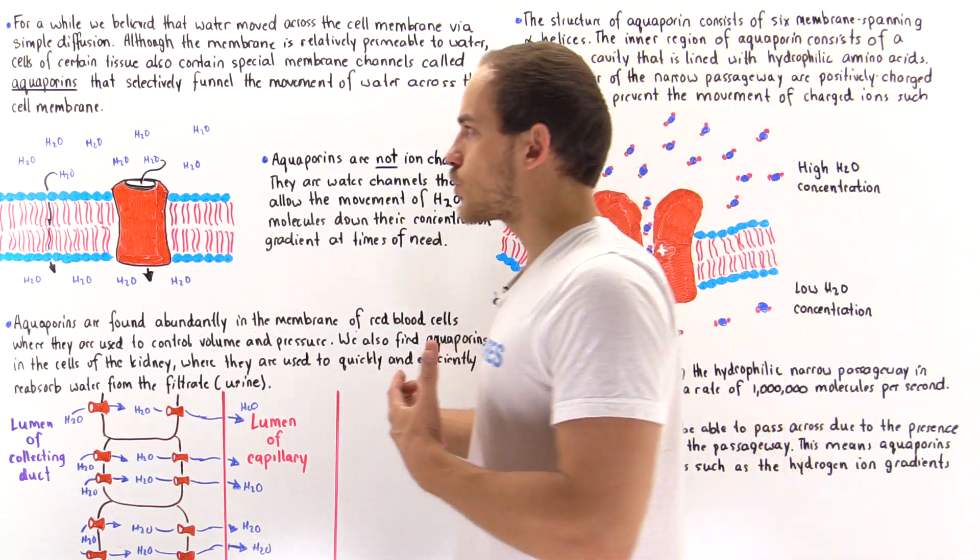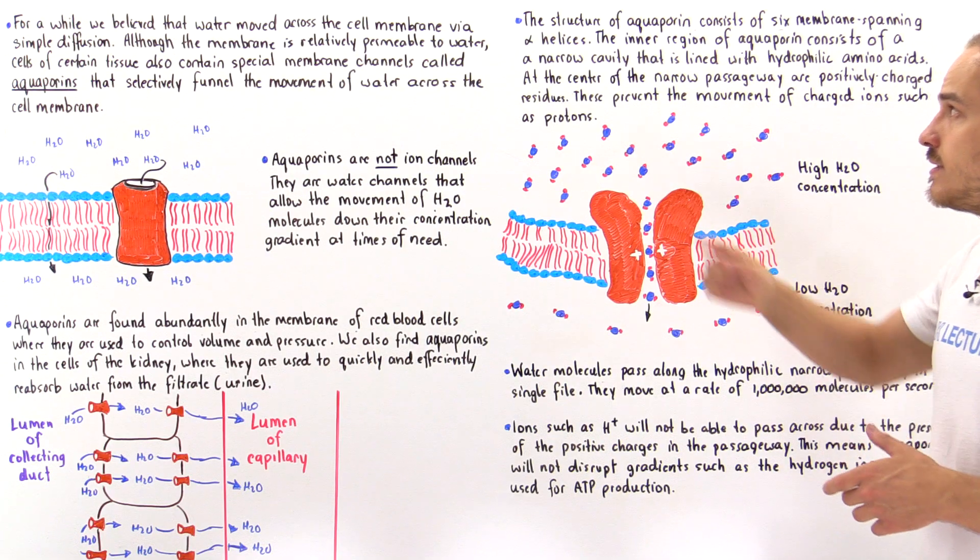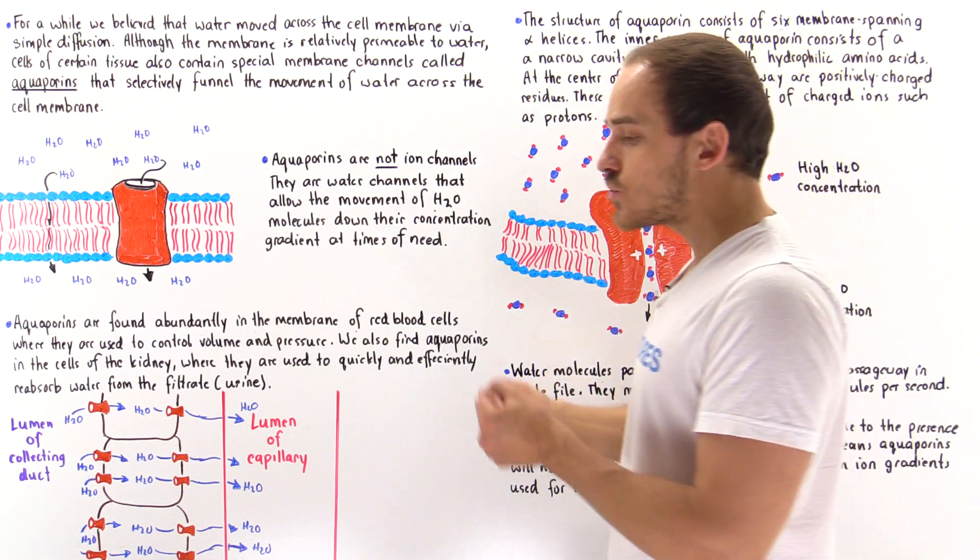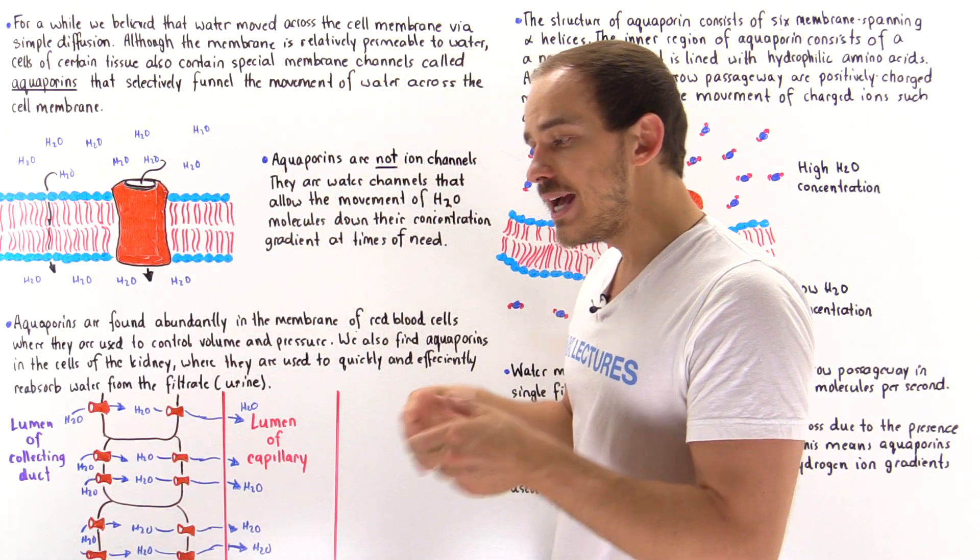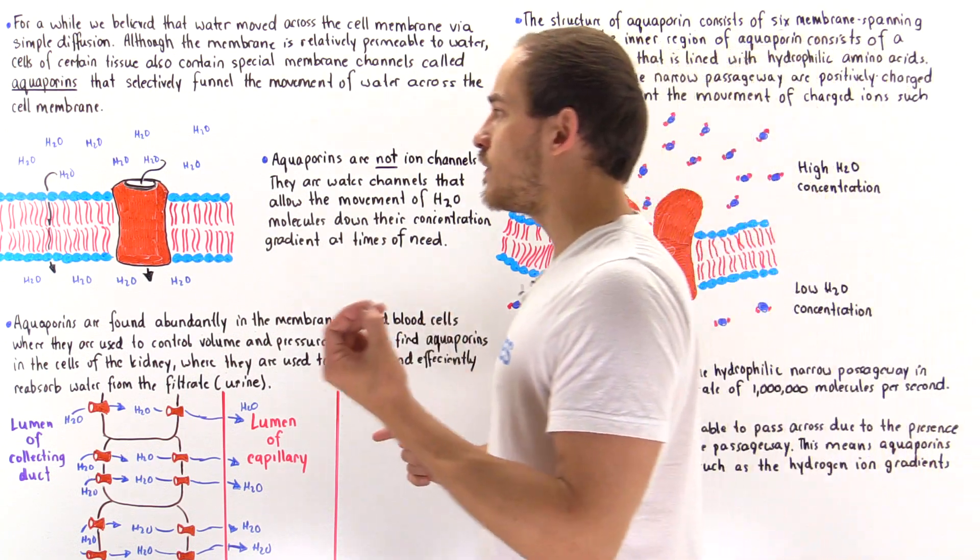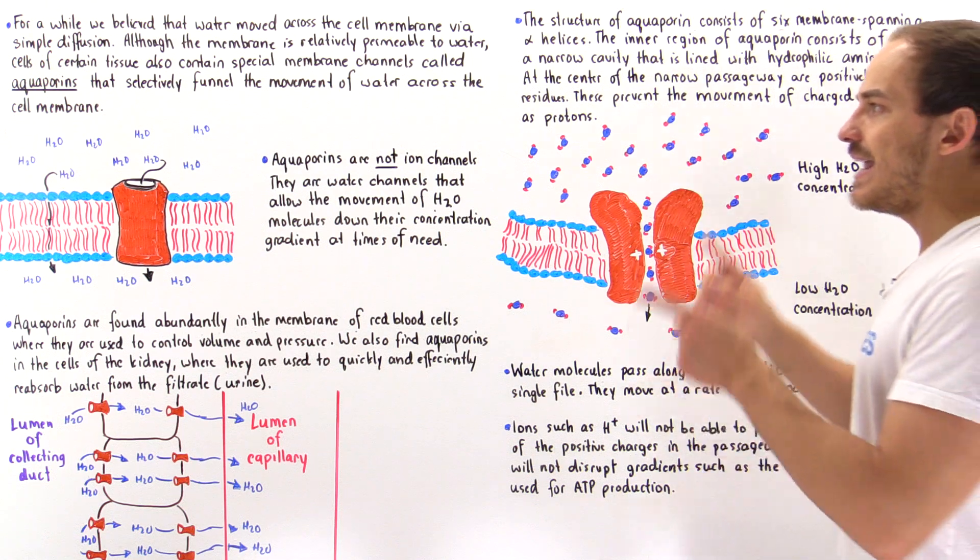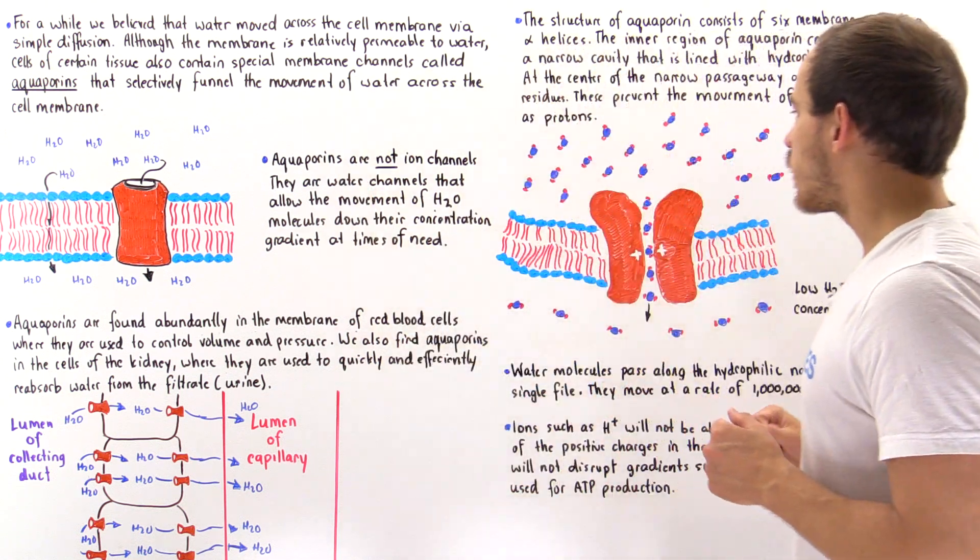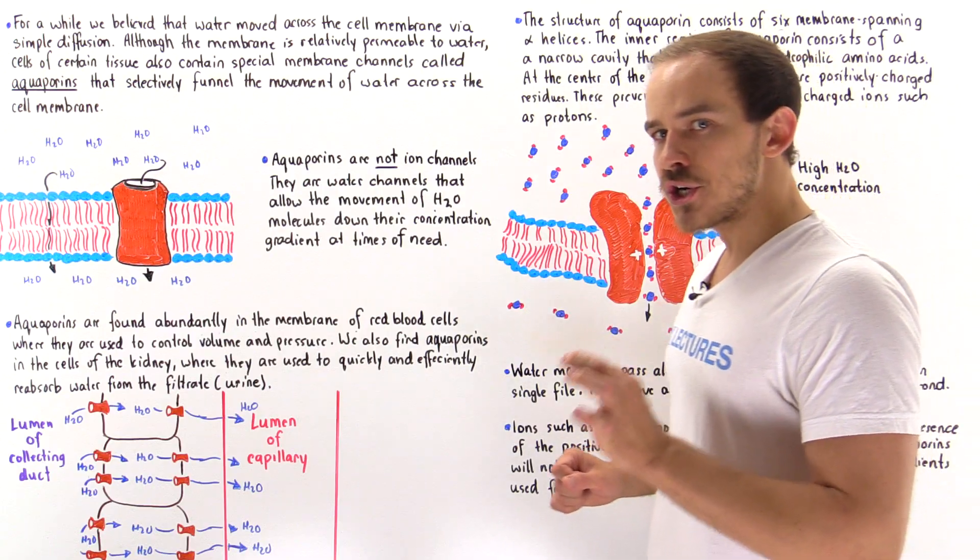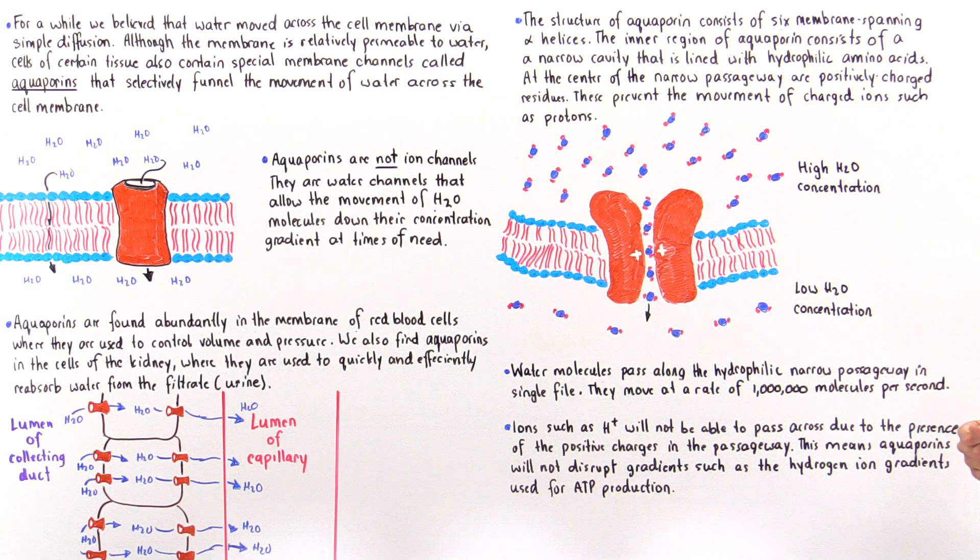What exactly is the structure of an aquaporin? Aquaporins basically consist of six membrane-spanning alpha helices. The inner region of these helices, the inner region of that aquaporin, actually contains this relatively narrow passageway that is lined with hydrophilic amino acids. These hydrophilic amino acids within that narrow passageway of the aquaporin must be able to interact in a stabilizing fashion with those water molecules because water is a polar molecule. On top of that, at the center of that narrow passageway are these amino acids that contain positive charges.